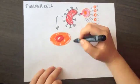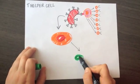Signals from helper T cells initiate activation of B cells, which secrete antibodies in order to neutralize pathogens.